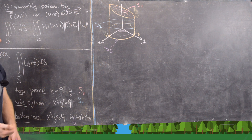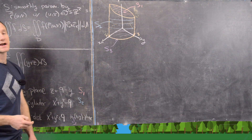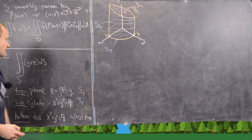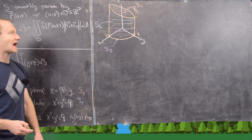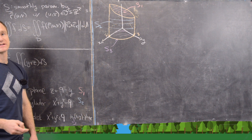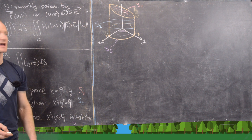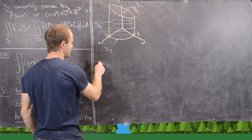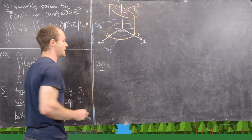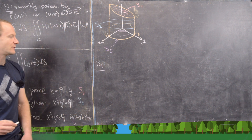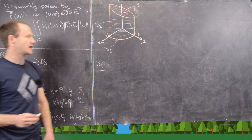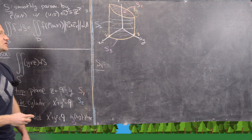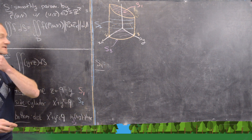We're going to tick these off one at a time — parametrize each part, then calculate the surface integral. We'll do S1 and S3 first and second, and then S2 last.